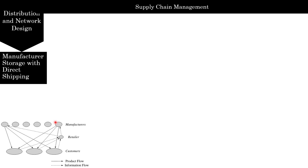Online retailers such as eBags and Nordstrom use drop shipping to deliver goods to end customers. The biggest advantage is the ability to centralize inventory at the manufacturer, aggregating demand across retailers it supplies. As a result, the supply chain can provide a high level of product availability with low inventory levels. The key issue with drop shipping is the ownership structure of inventory at the manufacturer — if inventory is allocated to individual retailers, there is little benefit from aggregation even though inventory is physically aggregated.